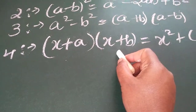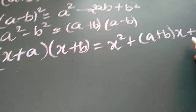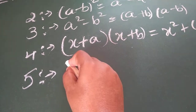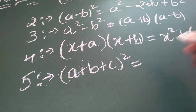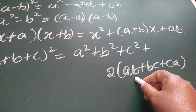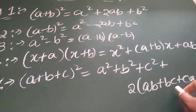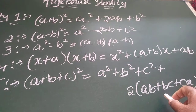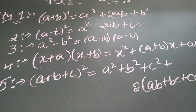Our fourth identity is x plus a into x plus b equal to x square plus a plus b into x plus ab. The fifth identity was explained with an example in my previous video: a plus b plus c whole square equal to a square plus b square plus c square plus 2ab plus 2bc plus 2ca. Kindly try to understand these identities. Today we are going to solve a new identity with examples covering expansion and factorization.